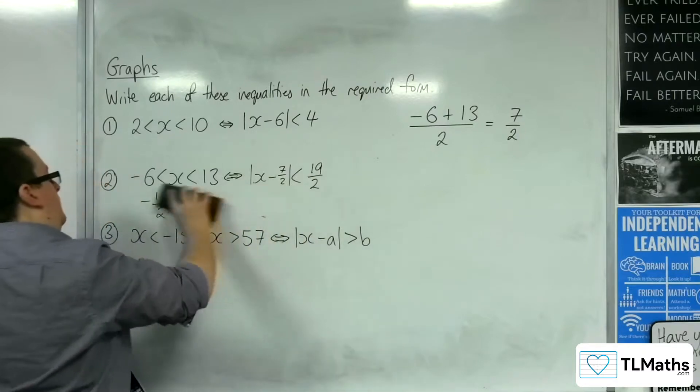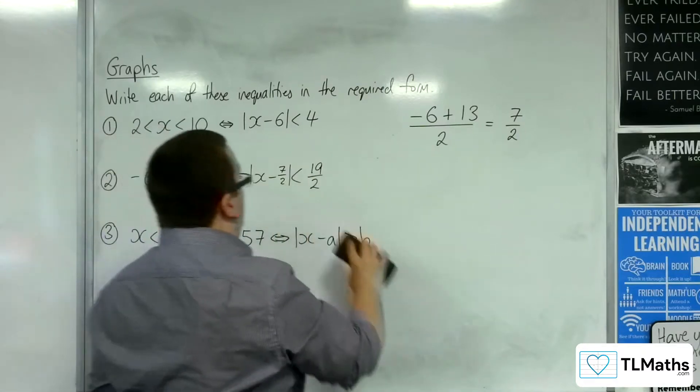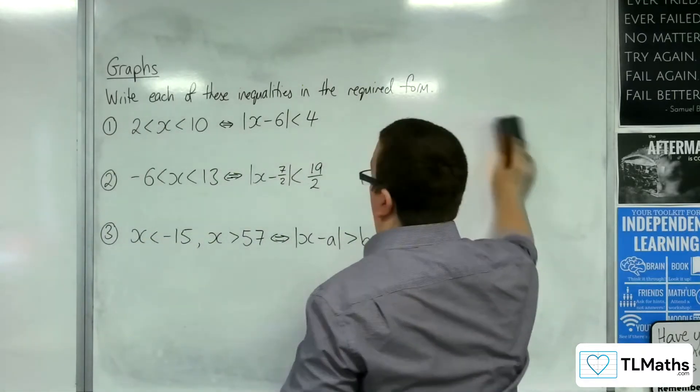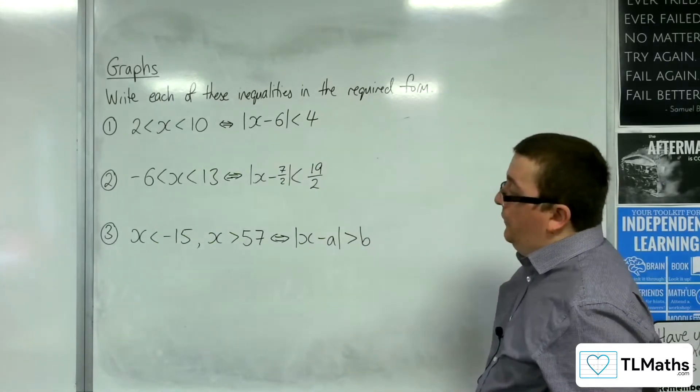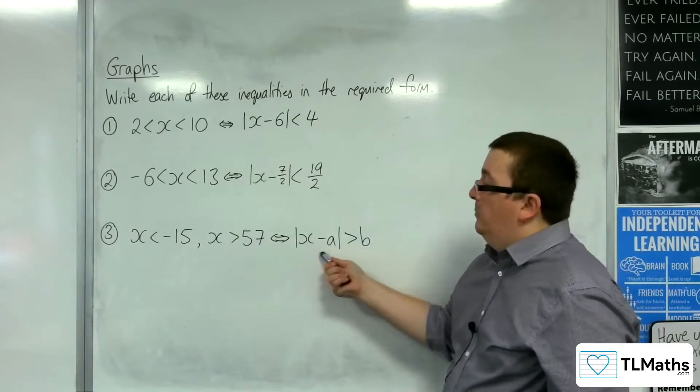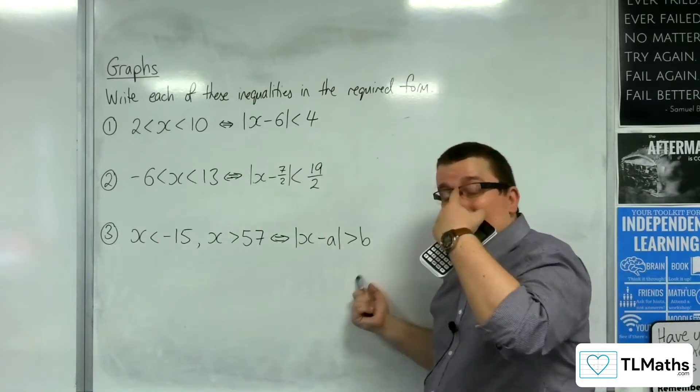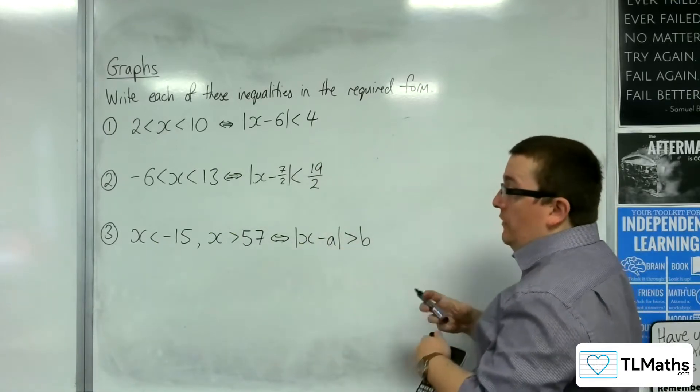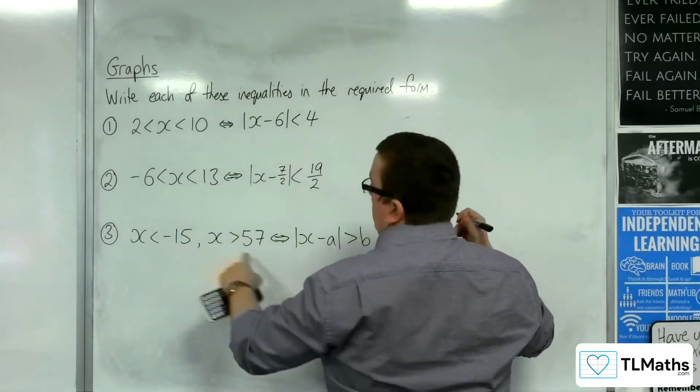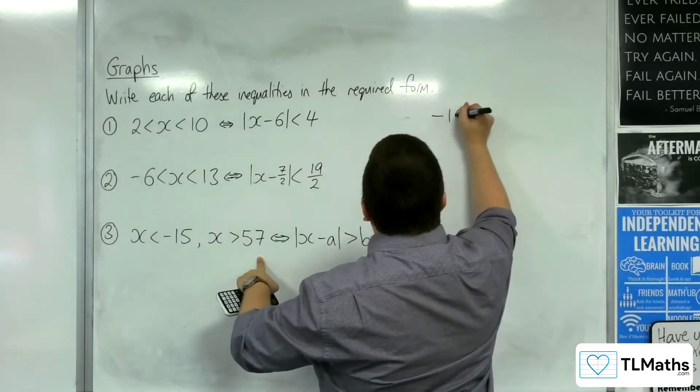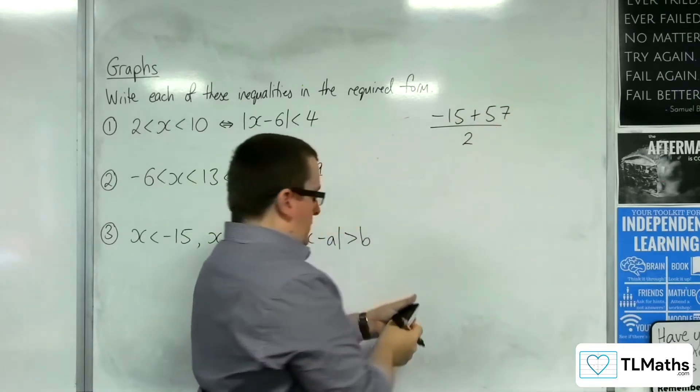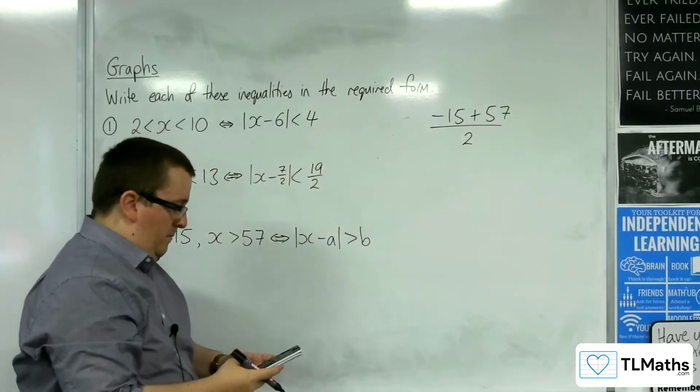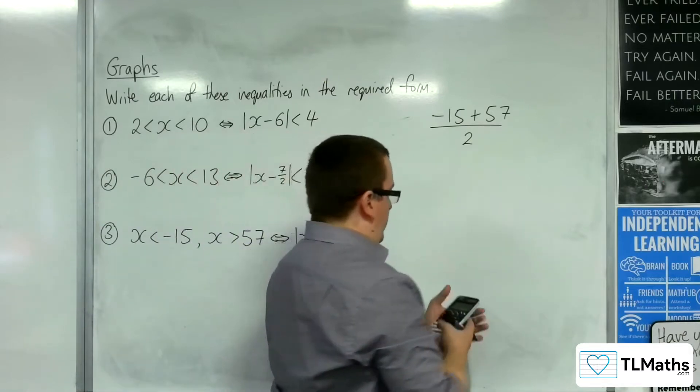Now have a look at number 3. X here is less than minus 15, x is greater than 57. We want to write it in the form of x minus A modded is greater than B. We're going to use the same methodology. We're going to add the minus 15 and the 57 together and divide by 2. Minus 15 plus 57 is 42, divide by 2 is 21.